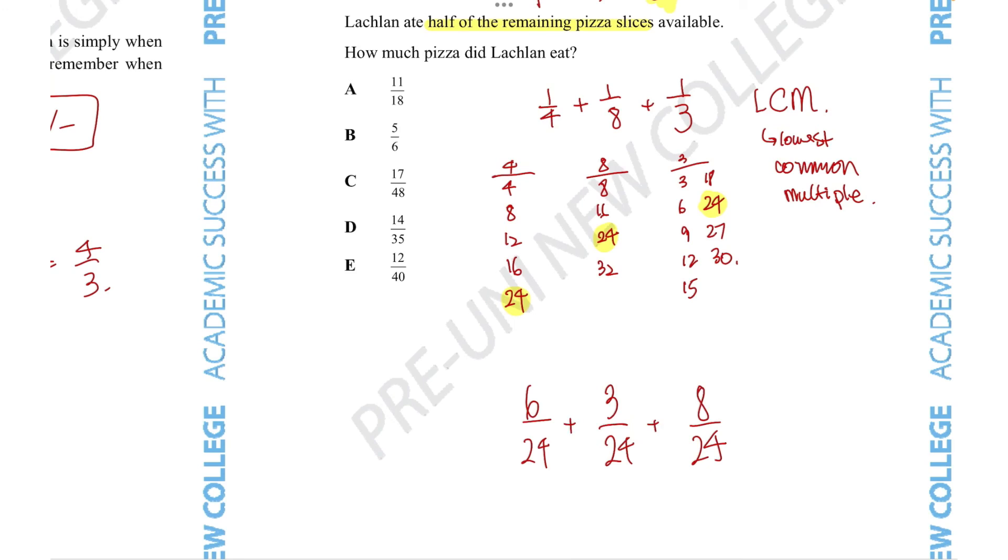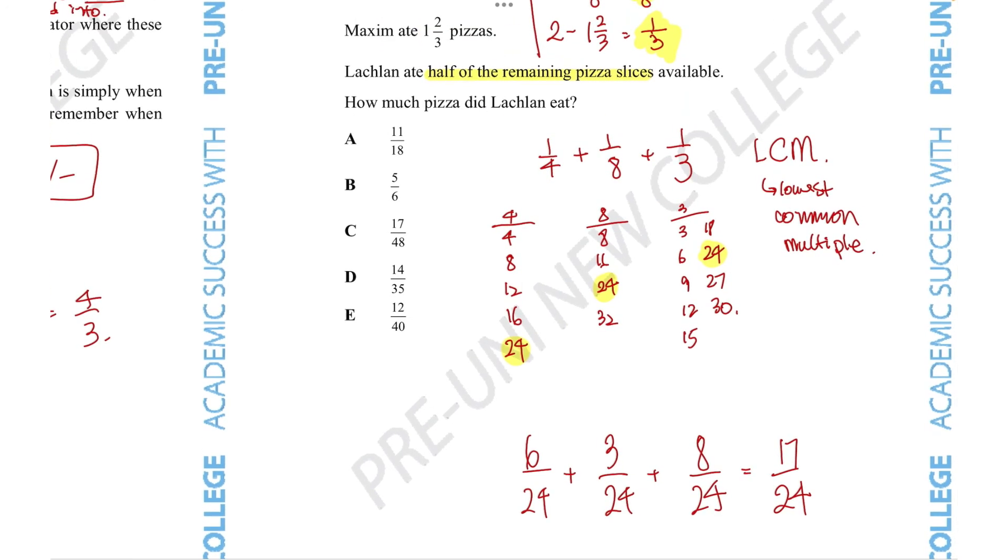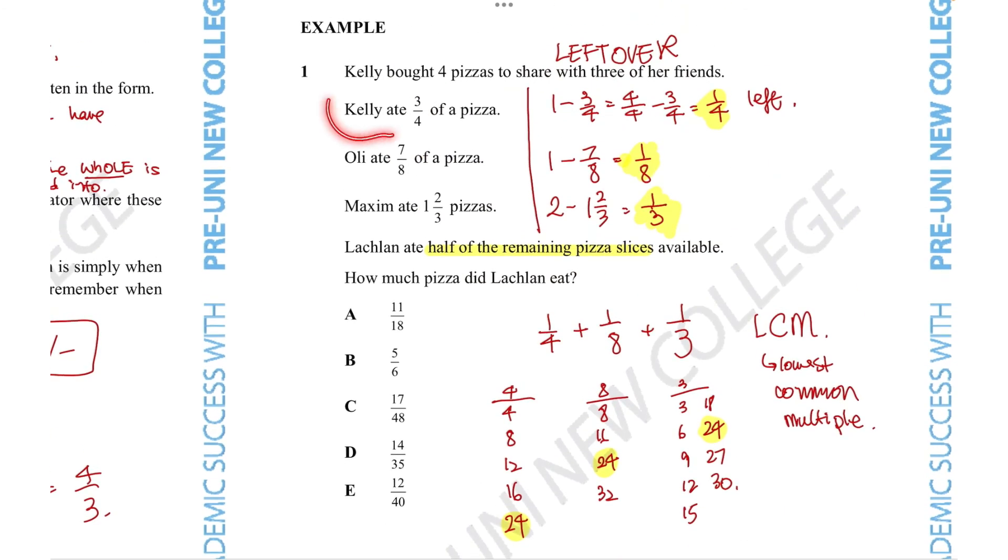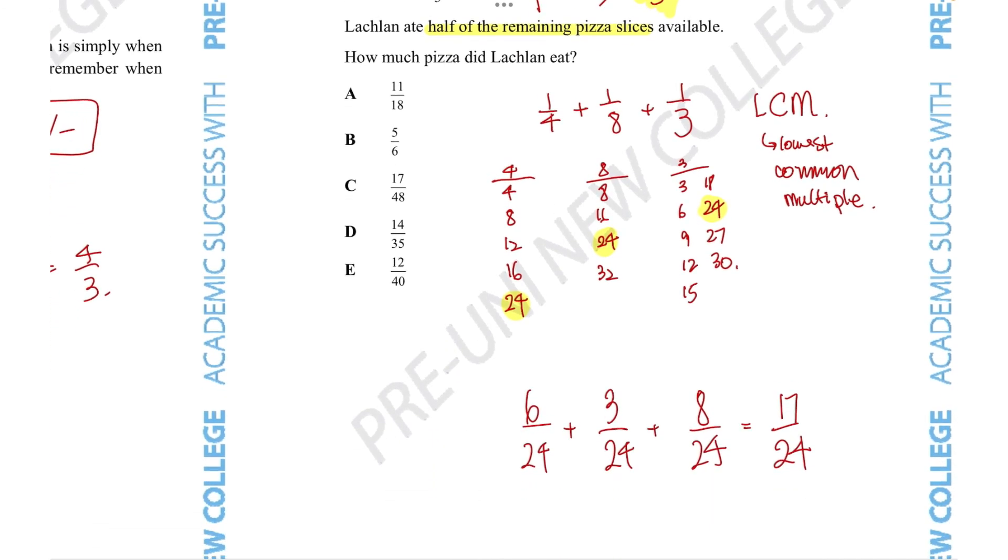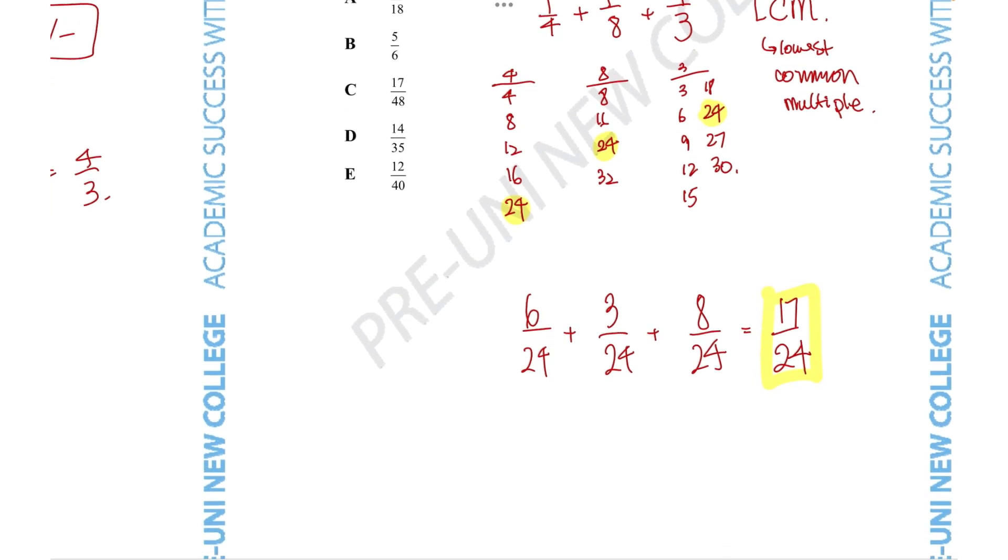So now that all the denominators have been equalized, we can just add these numbers together to get 17 over 24 as our correct answer. Now that is the answer for how much pizza is left over once Kelly, Ollie and Maxime has had a go. Remember that Lachlan has eaten exactly half of the remaining pizza slices available. So taking this fraction, we want to find what half is. So 17 over 24 times by a half gives us 17 over 48.